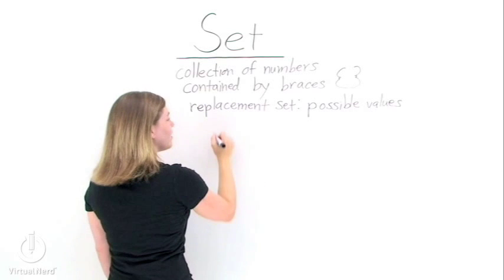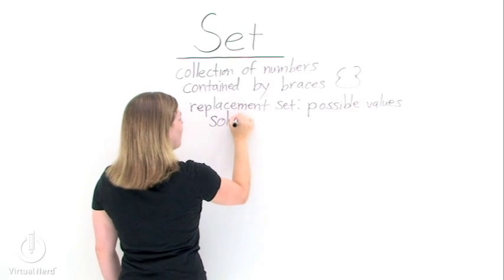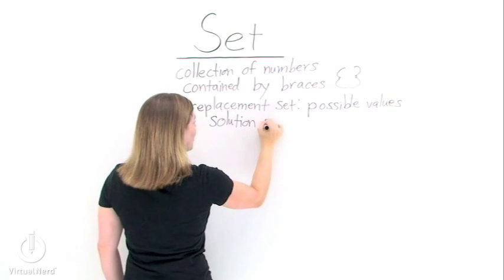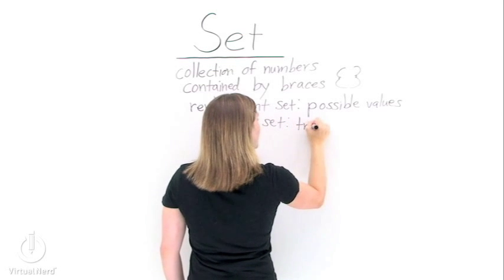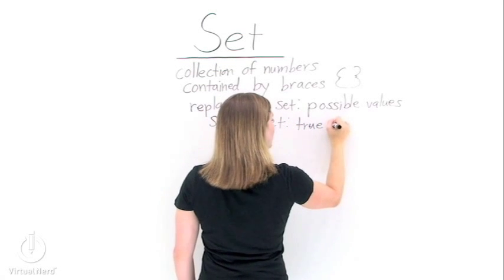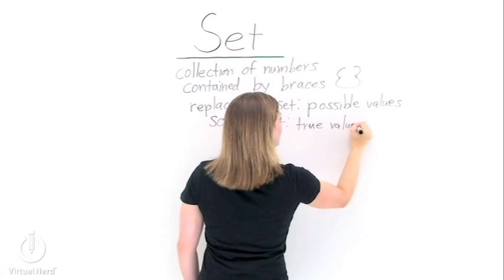Our second set is a solution set. That's usually the set you're looking for in a problem. This set contains all of the values from the replacement set that made the statement true.